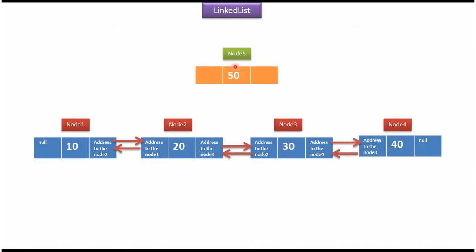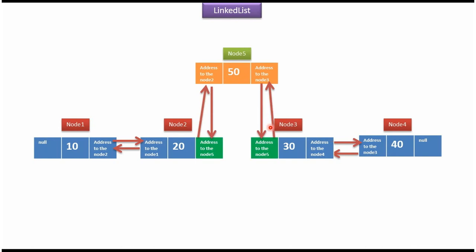If I insert node 5 between node 2 and node 3, only the address of the previous node and the address of the next node will change. To insert a new element in the linked list, no shifting of elements is needed like in ArrayList — only the address of the previous node and the address of the next node needs to be changed. So insertion of a new element in the linked list is faster than ArrayList.